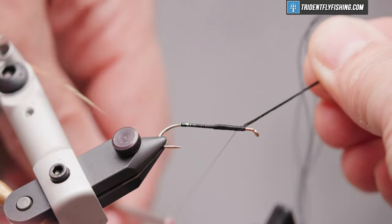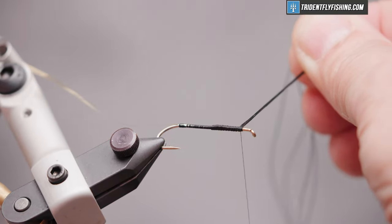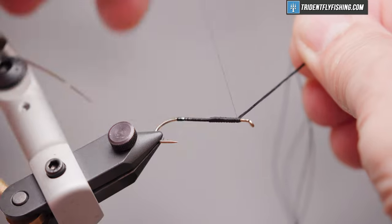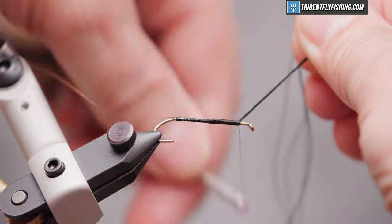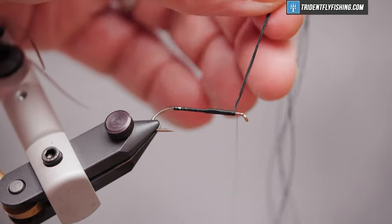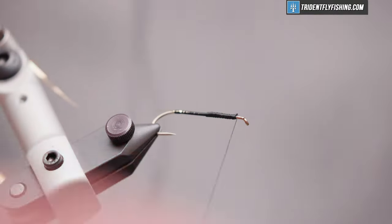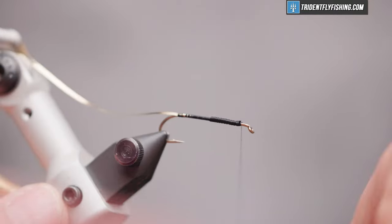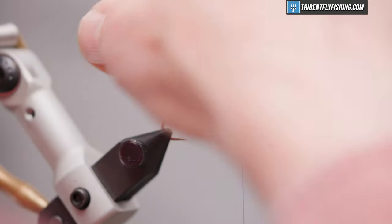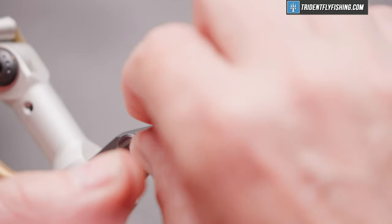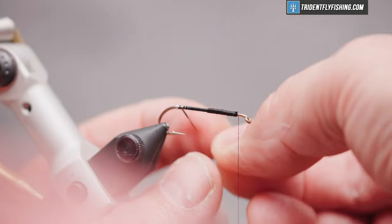When we reach our tie-in point, we'll capture that floss material with a couple wraps. Get rid of the excess and bring our rib up. Touching turns until we reach the floss material.